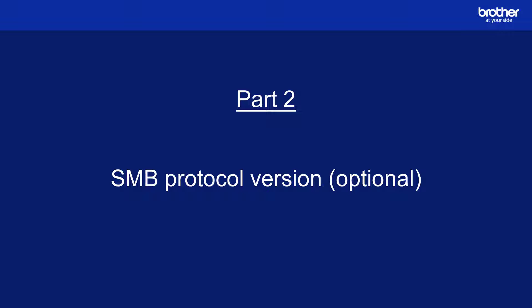Part 2: Setting the SMB protocol version. Scan to Network Folder uses the SMB protocol for transferring scan data to the shared network folder. By default, Brother devices are configured to auto-discover and match the SMB version your computer or server is using. If you want to change this default behavior so that your Brother device only communicates using its latest supported SMB version, you can.